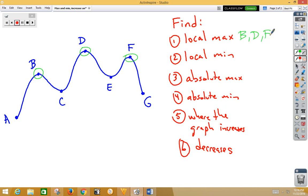The local minimums would occur where it turns at C and E. Our absolute max appears to be at D, the highest part of the graph. Our absolute minimum appears to be at A, because it's the absolute lowest part of the graph.